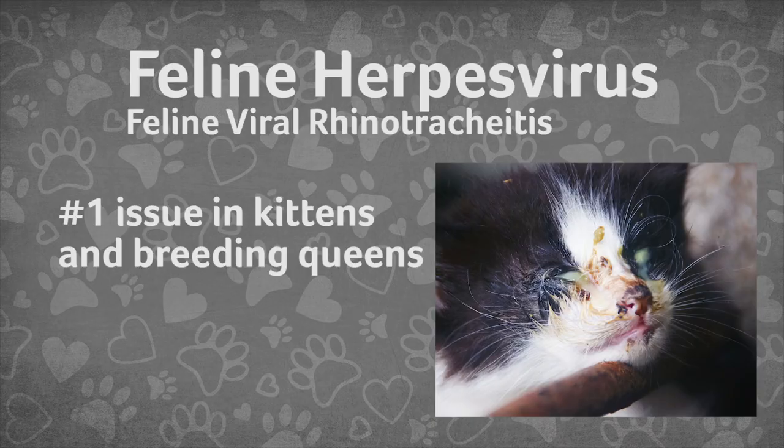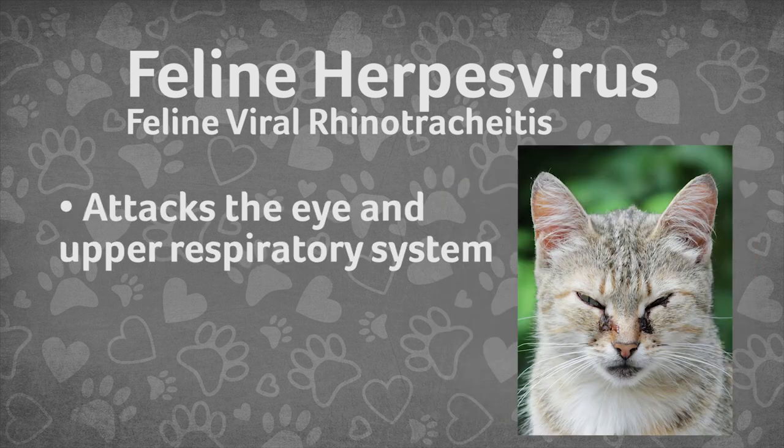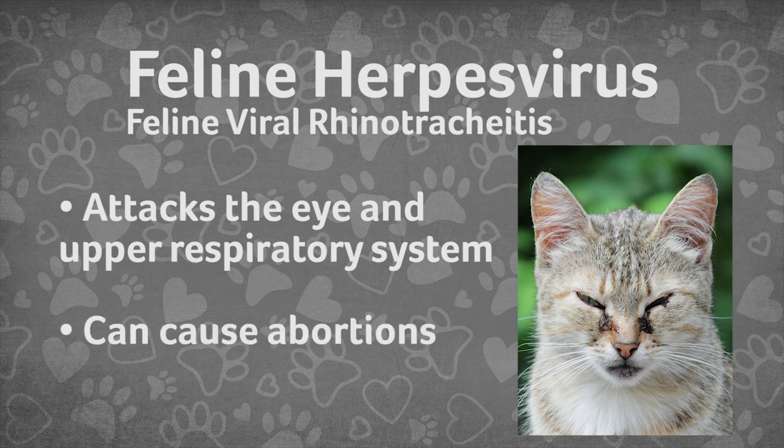If left untreated, these respiratory infections can turn fatal. So what are the biggest causes of upper respiratory infections in cats? Feline herpes virus, also known as feline viral rhinotracheitis, is the number one issue in kittens and breeding queens. This virus attacks the eye and upper respiratory system, and in breeding queens it can even cause abortions.